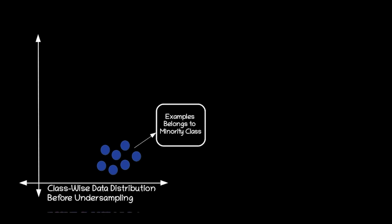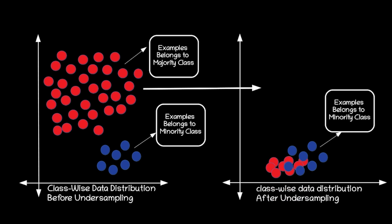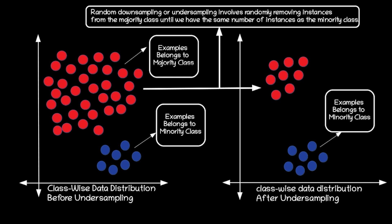Consider a dataset and its class-wise data distribution before undersampling. The blue circles represent examples belonging to the minority class and the red circles represent examples belonging to the majority class. Now let's see the class-wise data distribution after undersampling. As you can see, the number of red circles has been reduced, as random downsampling or undersampling involves randomly removing instances from the majority class until we have the same number of instances as the minority class. Here you can see the examples belonging to the majority class and the minority class are the same.